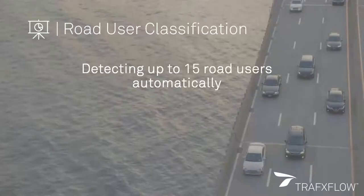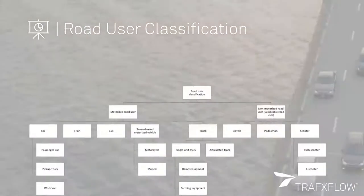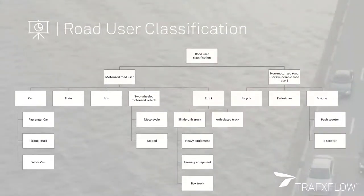Our automated road user classification performs at the highest level of the industry. We are able to detect 15 different road user types. Here you see a breakdown of them between motorized and non-motorized road users. Starting with motorized road users, we are able to distinguish between different types of cars, whether it's a passenger car, a pickup truck, or a work van.